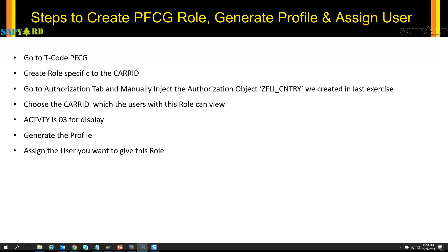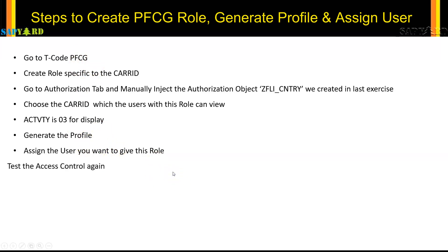Say we created the role Z_US — in that case, I will give that role to all the users who are eligible to see the flights from USA. Air India might be one of the flights, so I will put the carrier ID value as AA (that means Air India), and then use that PFCG role to give access to the users who are from USA, and then we will test that access control again.